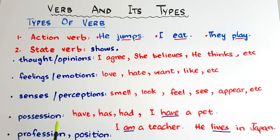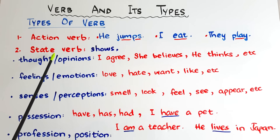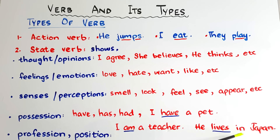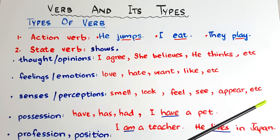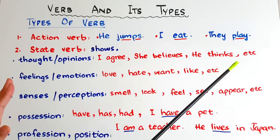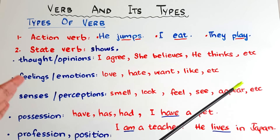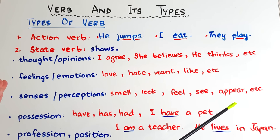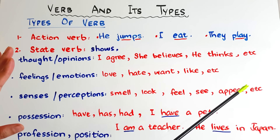If we are talking about the past, we need to use 'had.' State verbs are also used to show profession or position, like 'I am a teacher' — being a teacher is my profession, so the verb 'am' here is acting as a state verb. Or 'he lives in Japan' — the verb 'lives' is also not showing any action; it is a state of somebody.